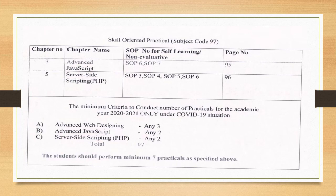The minimum criteria to conduct practicals in this pandemic situation are: Advanced Web Designing — any 3, Advanced JavaScript — any 2, and Server Side Scripting PHP — any 2. So a total of 7 practicals have to be conducted this year. This is all about the 12th standard IT syllabus which has been reduced.